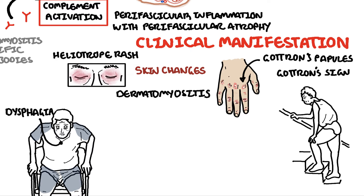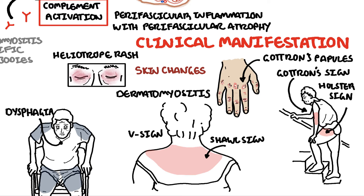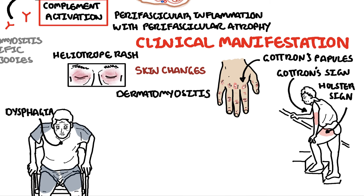Gottron's sign consists of red macules or patches over extensor surfaces of elbows, knuckles, knees, and ankles. Other characteristic rashes include the shawl sign and V sign, which are photosensitive, and the holster sign across the thigh. Nail fold changes are also seen, including subungual erythema and dilated capillary loops.